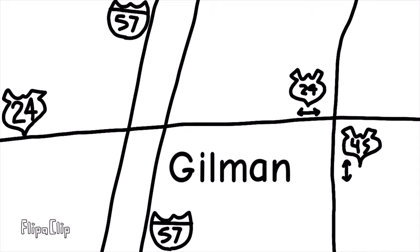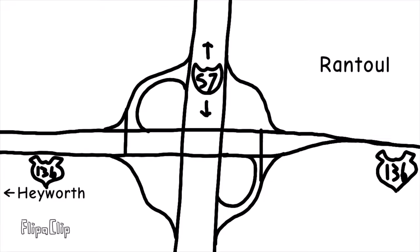Continuing south from Kankakee, I-57 has an exit with U.S. Route 24 in Gilman. Down the road, it intersects 136 in Rantoul before entering the Champagne-Urbana area.